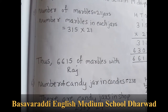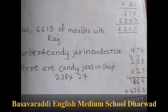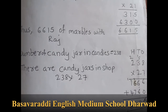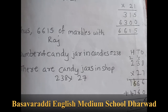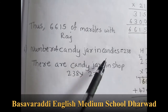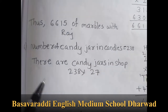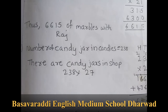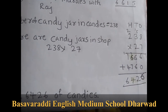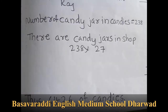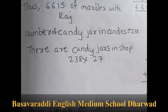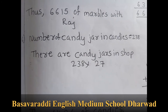Sixth one: A candy jar in a shop contains 238 candies. If there are 27 candy jars in the shop, find the total number of candies. So 238 into 27. The answer is 6426. Thus there are 6426 candies. The remaining problems are homework for you, questions 7 to 12.